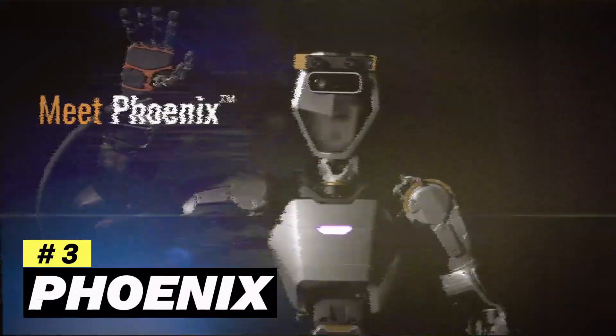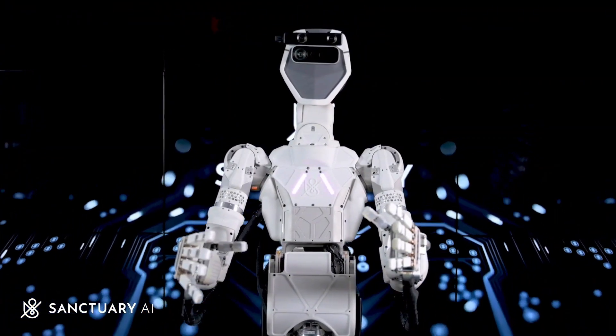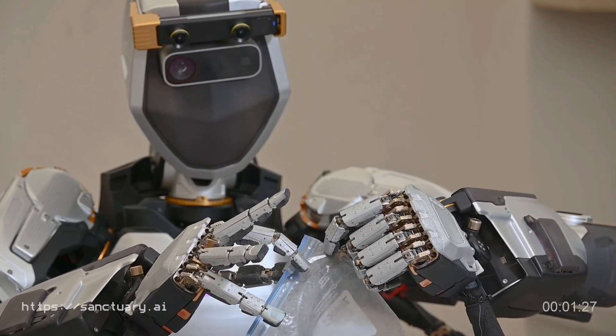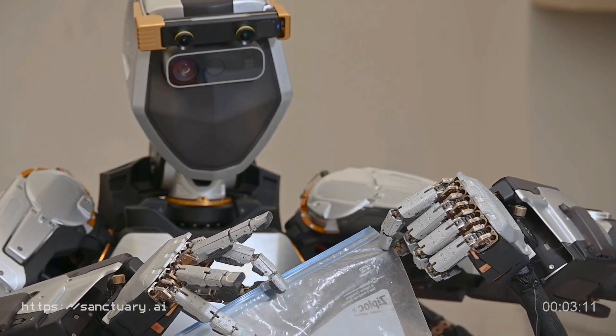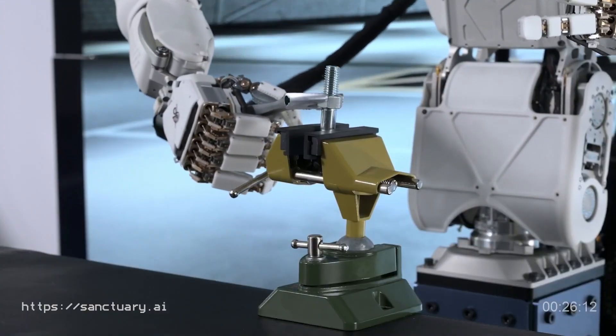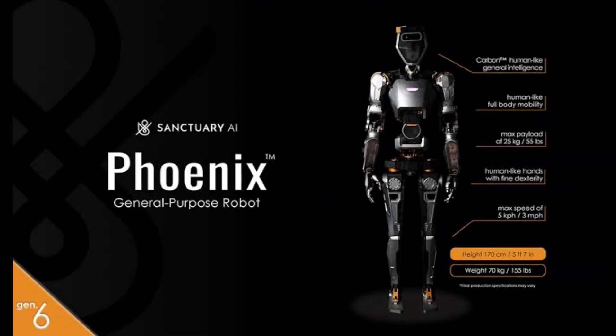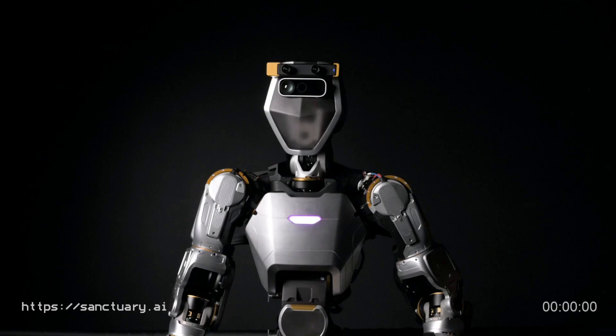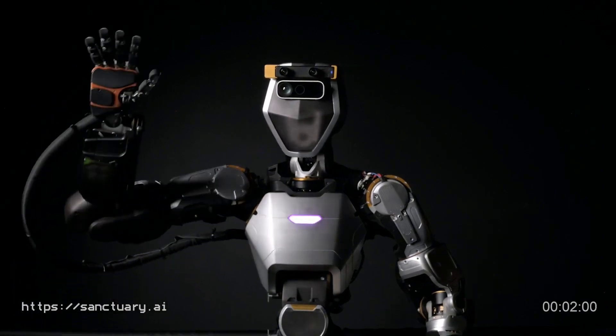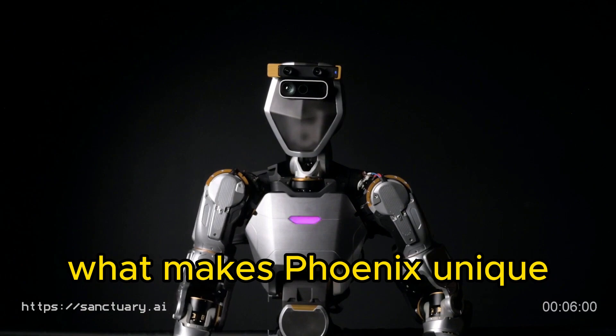Number 3, Phoenix by Sanctuary AI. Sanctuary AI is a Vancouver-based company that is saddled with the vision to design and develop general-purpose robots that possess human-like intelligence. As we unveil this latest creation from Phoenix, get ready to be blown away. This latest creation of Sanctuary AI can pass as the first humanoid general-purpose robot in the world. You may wonder about what makes Phoenix unique. Well, let's explore that together.